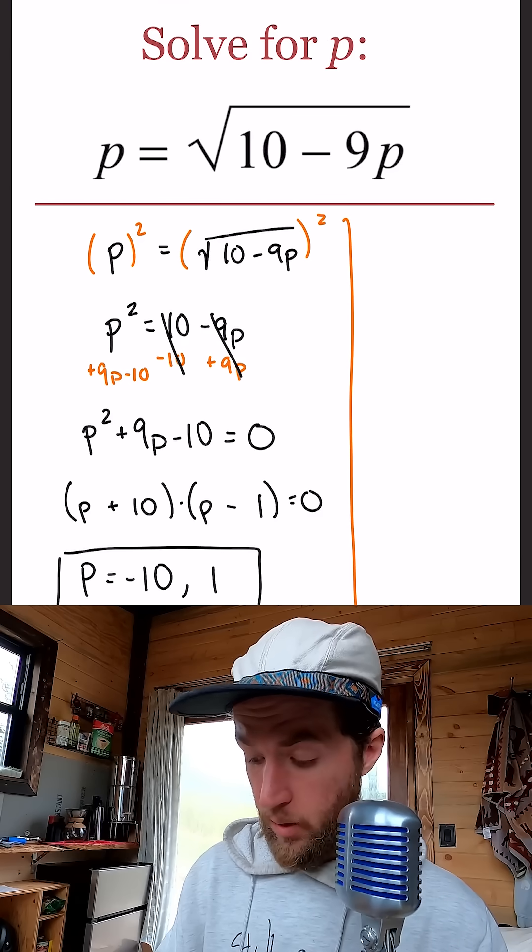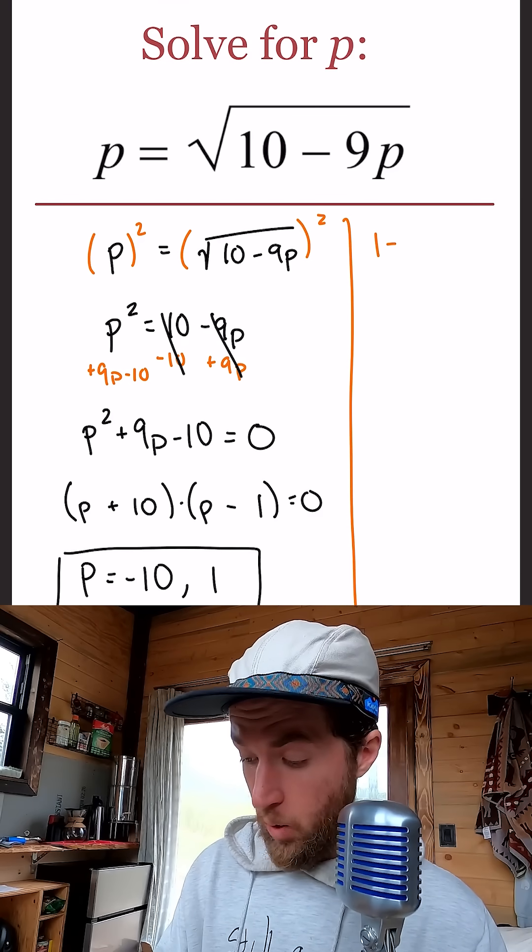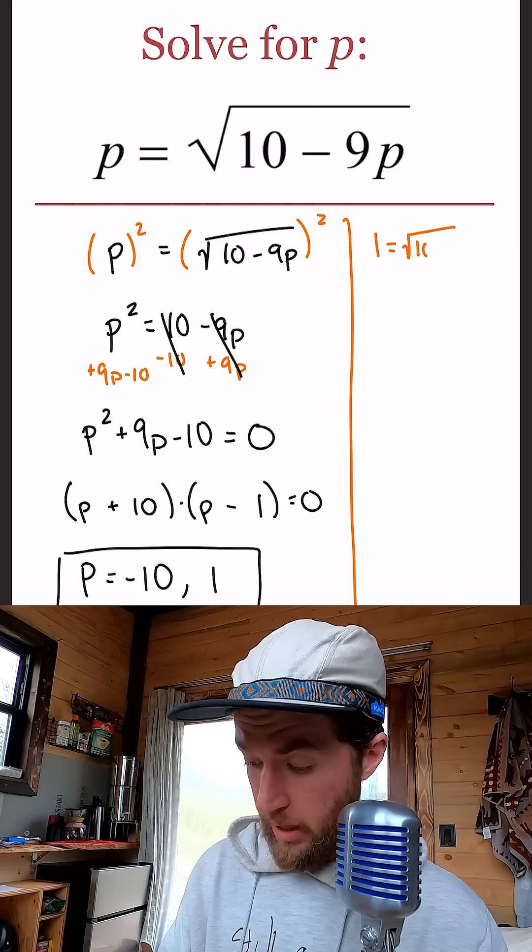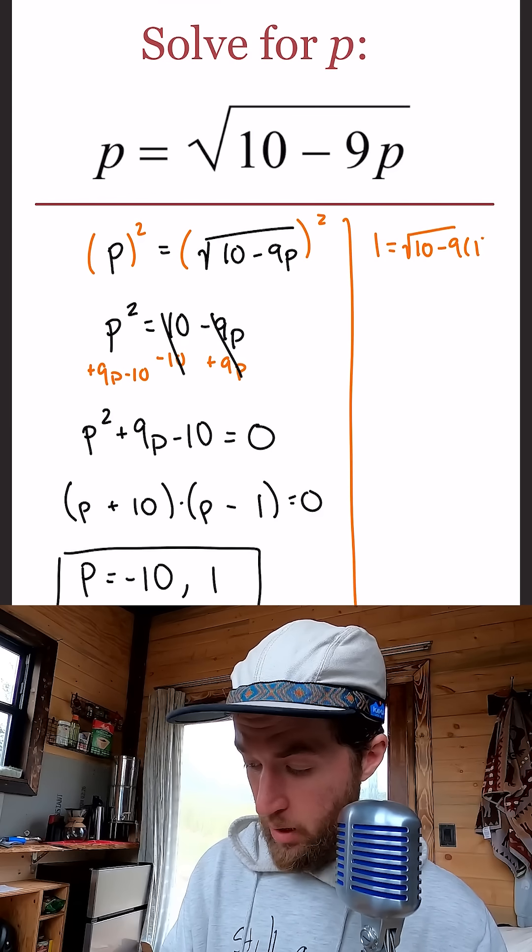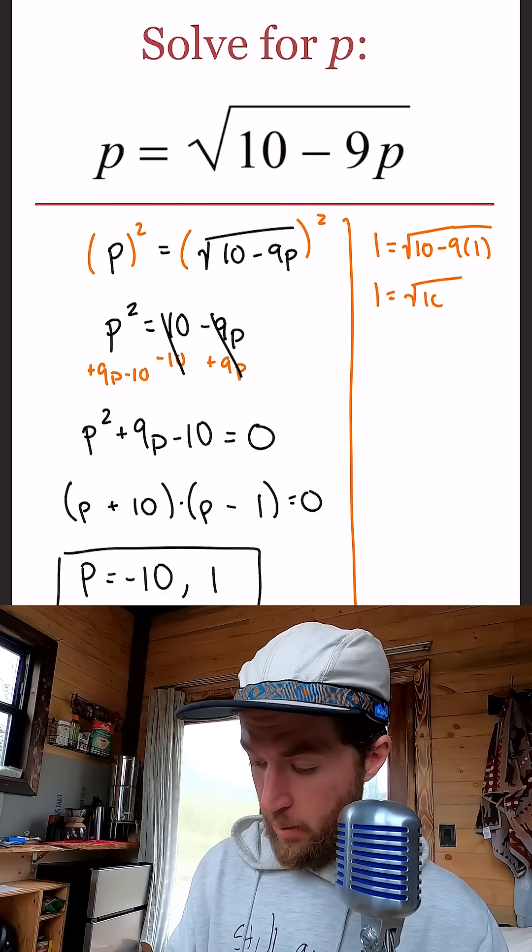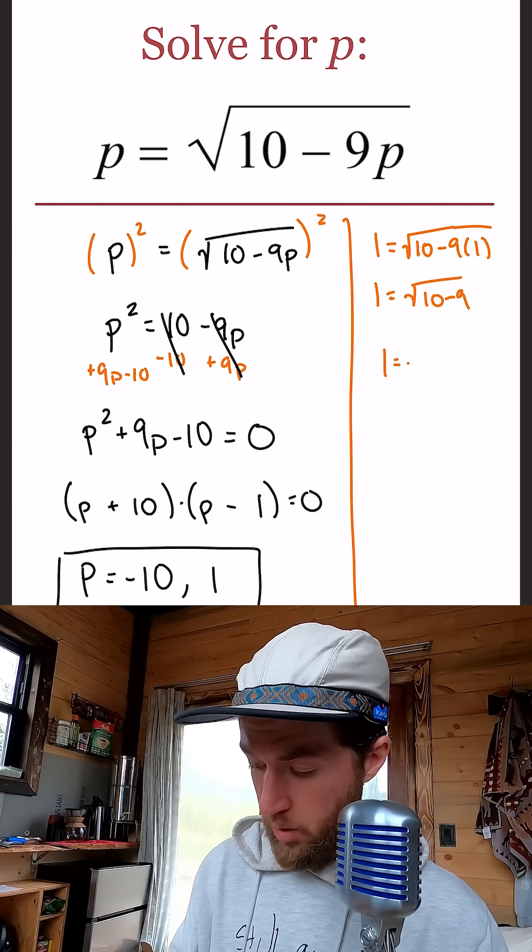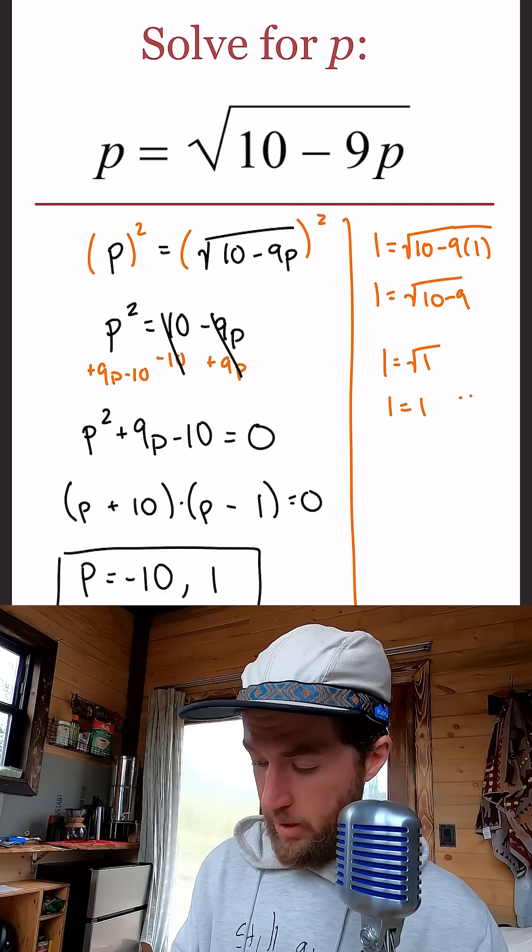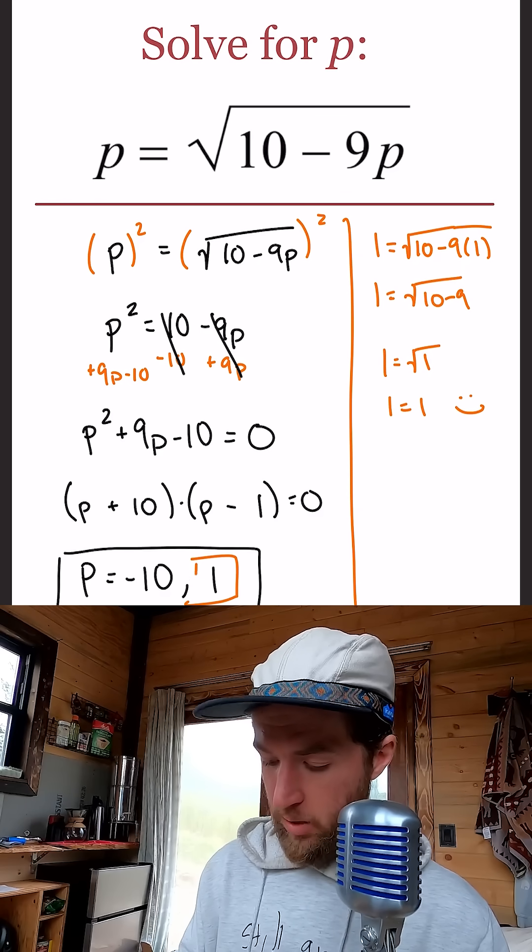So let's start with 1. Does 1 equal the square root of 10 minus 9 times 1? Plugging in 1, we get 1 equals the square root of 10 minus 9. Does 1 equal the square root of 1? 1 equals 1. Yes. So 1 is an official answer.